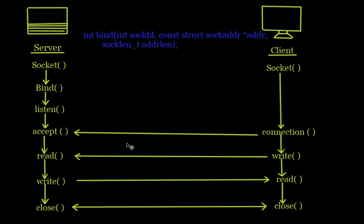Now let's find out what the bind function does. When a socket is created with the socket function, it exists in an address family namespace but has no address assigned to it. Bind assigns the address specified by addr, which is the second parameter, to the socket referred to by the file descriptor sockfd. The first parameter sockfd is returned by the socket function.